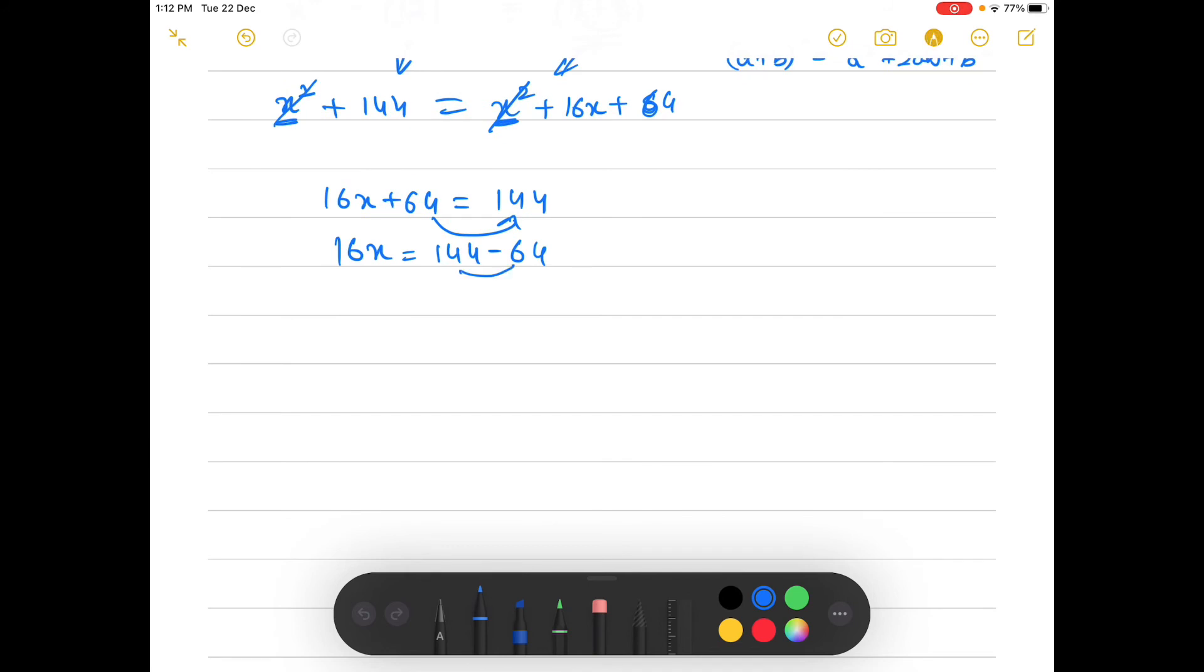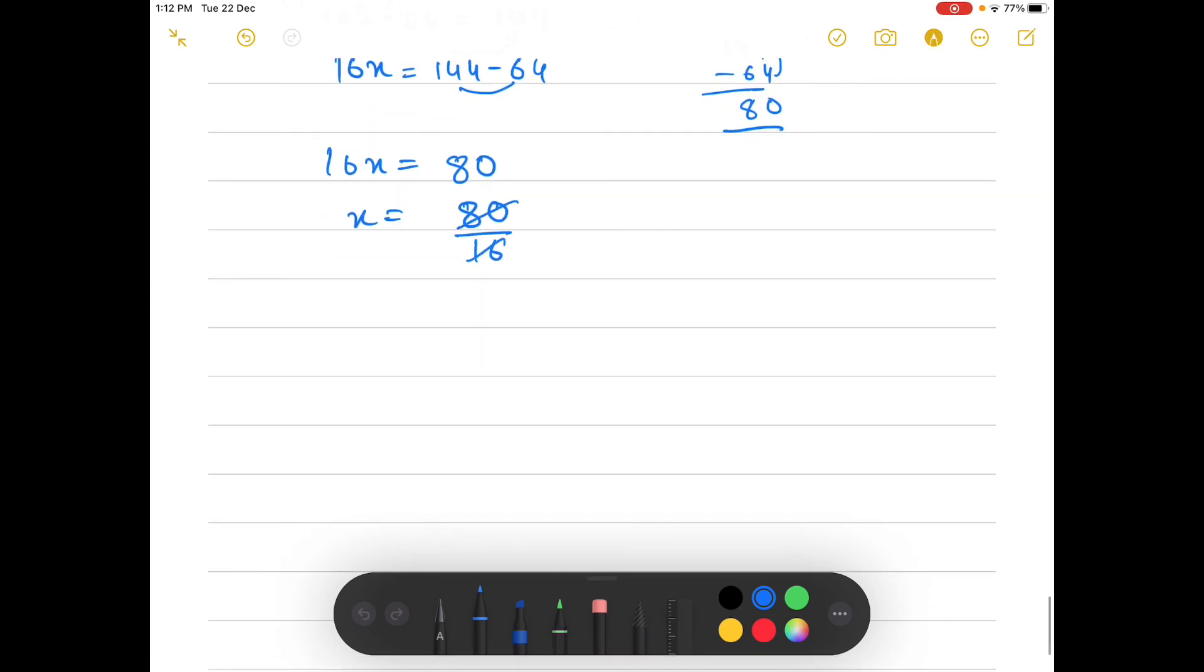So we can subtract it and we get 16x is equal to 80. x is equal to 80 by 16. When we cancel them out, x is equal to 5.